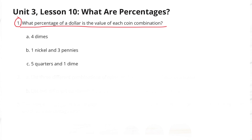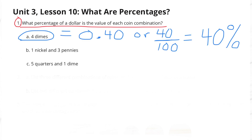A. Four dimes. Four dimes is 40 cents, which is the same as 40 hundredths, or 40 out of 100, which is 40%.